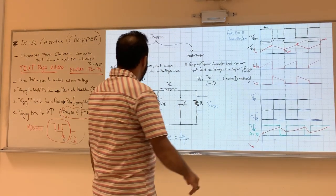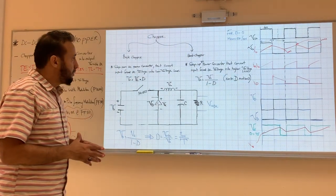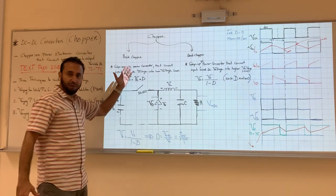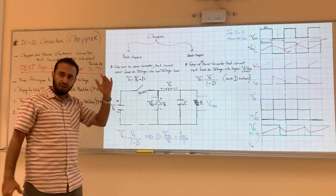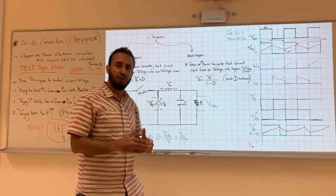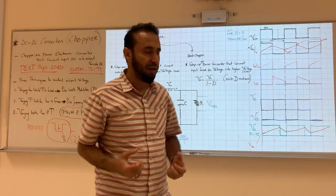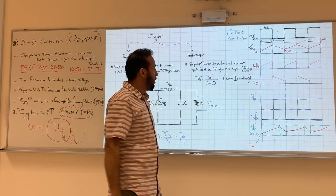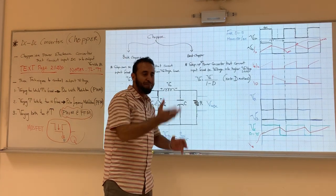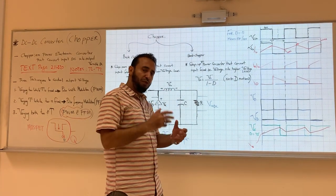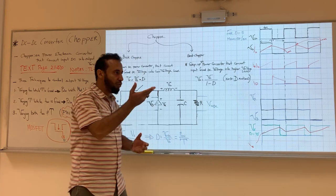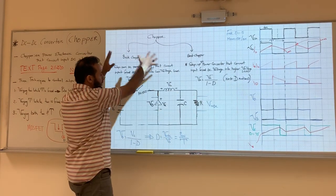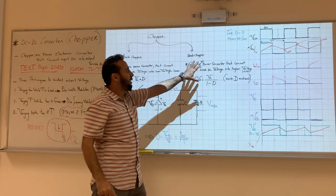Hello everyone, our topic for today is chopper. Last time we covered the buck chopper which is stepping down the voltage from DC fixed to DC variable, and today we will cover the boost chopper which is the opposite. It will convert or step up the DC voltage from fixed into variable. Last time we covered the buck chopper and today we're going to cover the boost chopper.